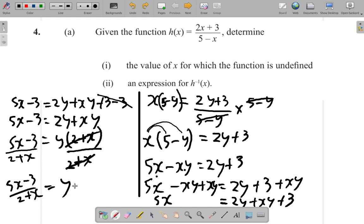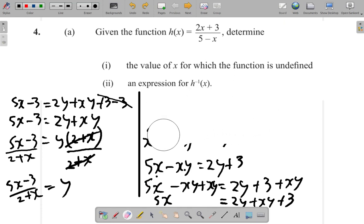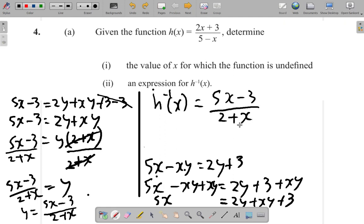Therefore, if I switch over, put the y on the left, I have y equal 5x minus 3 over 2 plus x. And I change y to h inverse of x. So h inverse of x is equal to 5x minus 3 over 2 plus x. And that is h inverse of x.